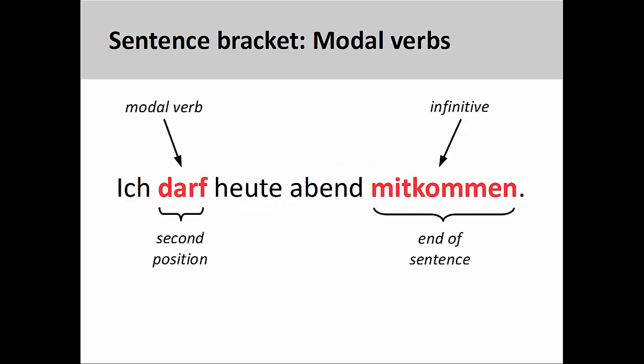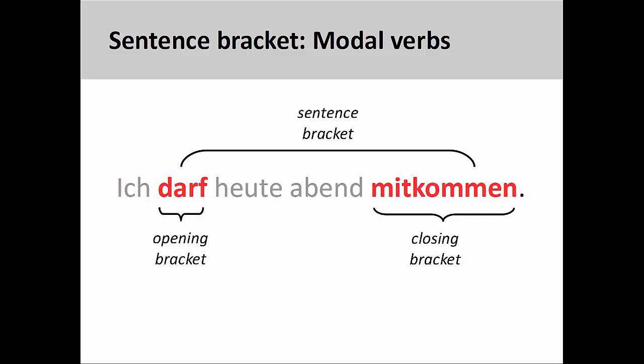For example, we also saw in the presentation on separable prefix verbs that modal verbs kick the infinitive form of the verb to the end of the sentence or clause. In the sentence you see here, the modal verb darf, meaning may, appears in the second position, and the infinitive form of the verb mitkomme appears at the end of the sentence. In this sentence, the modal verb forms the opening bracket, and the infinitive verb forms the closing bracket.